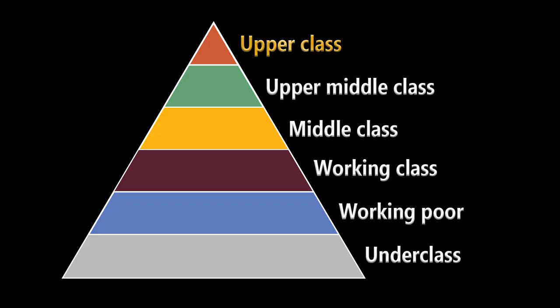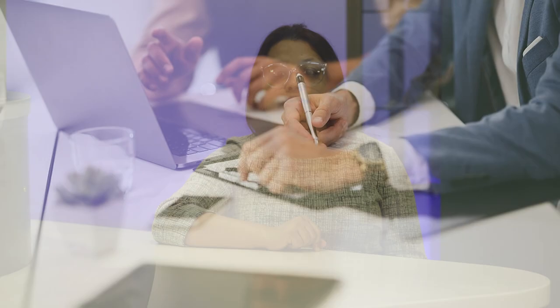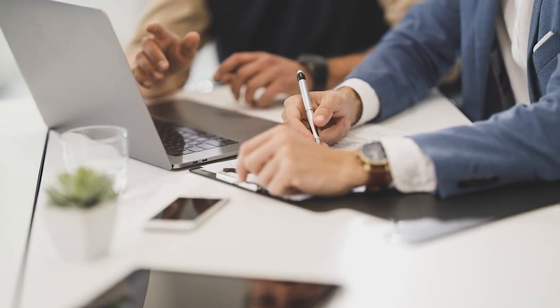On the very top, you have the upper class, followed by the upper middle class, the middle class, the working class or lower middle class, the working poor, and at the bottom you have the underclass. The upper class consists of the wealthiest people in the class system, such as the Rockefellers, the Carnegies, Bill Gates, and Elon Musk, who possess most of the wealth of the country, and they make up 1% of the U.S. population. The upper middle class includes professionals and managers, and they make up about 14% of the U.S. population.